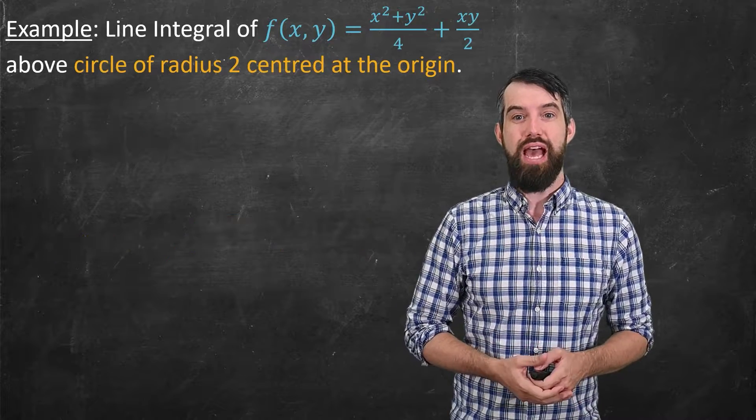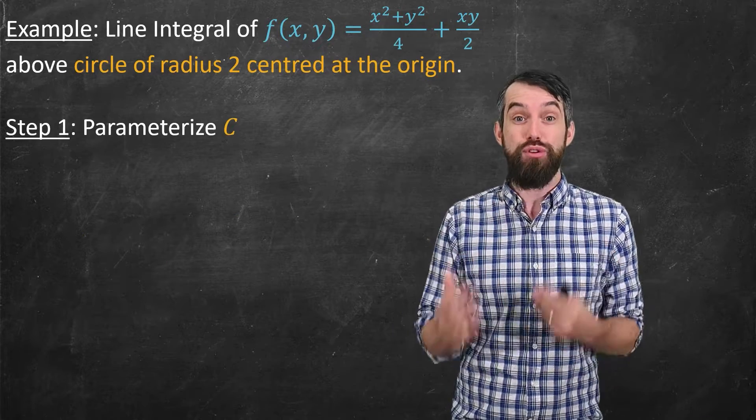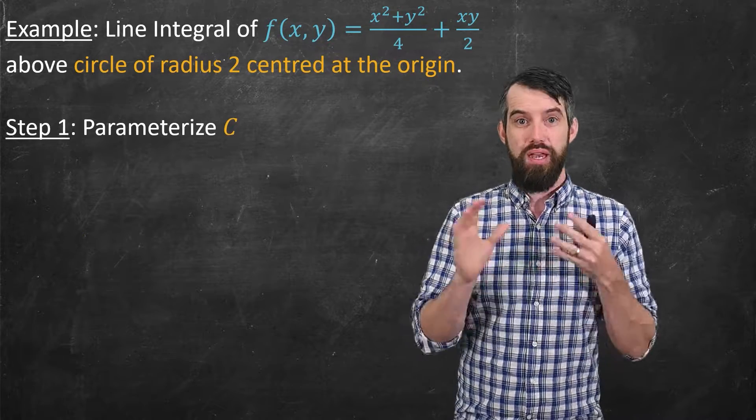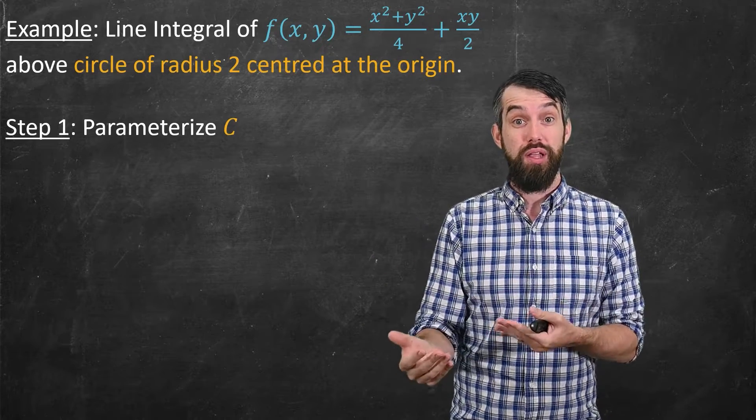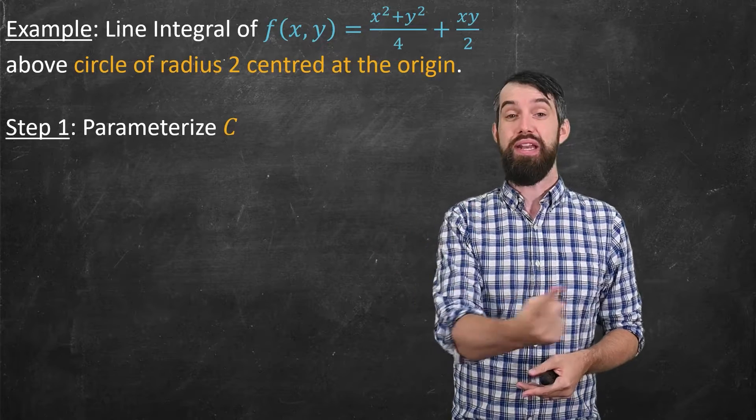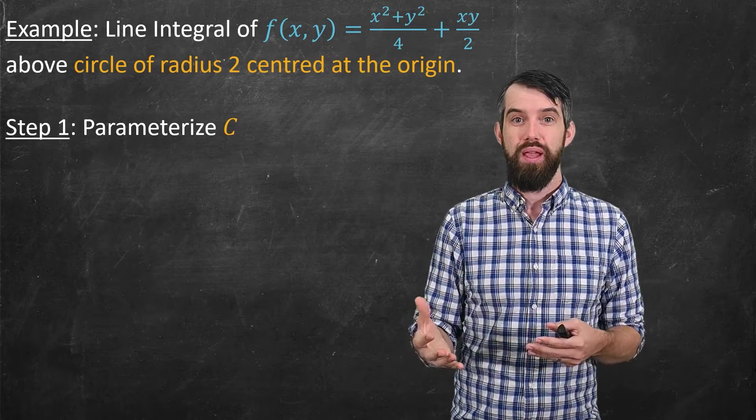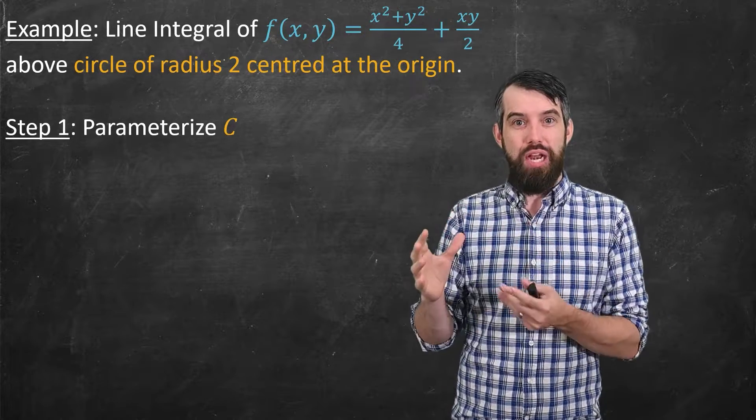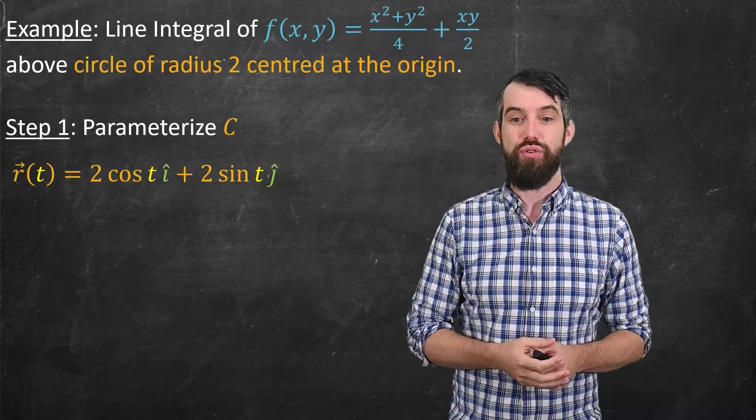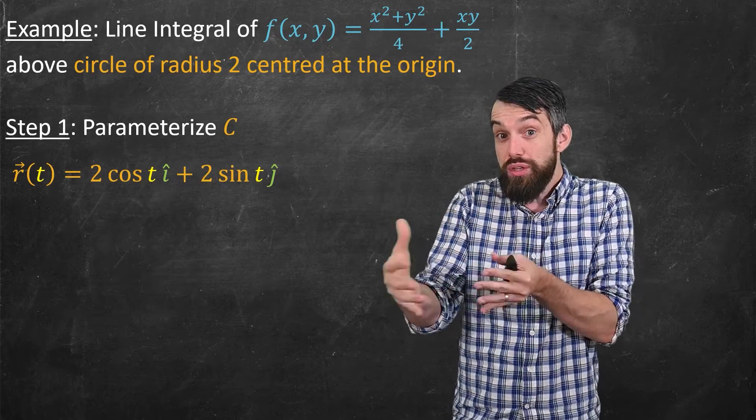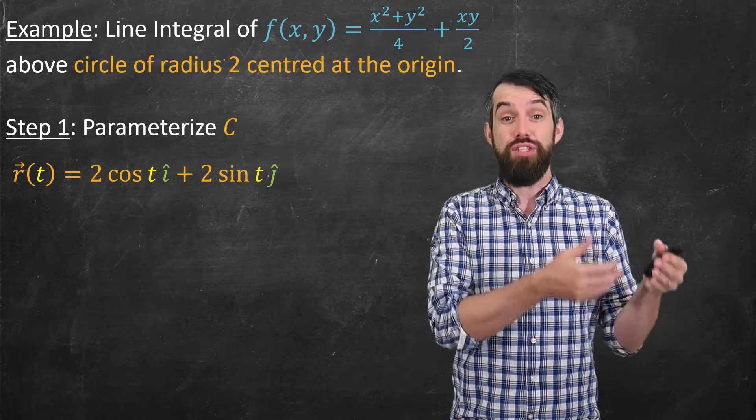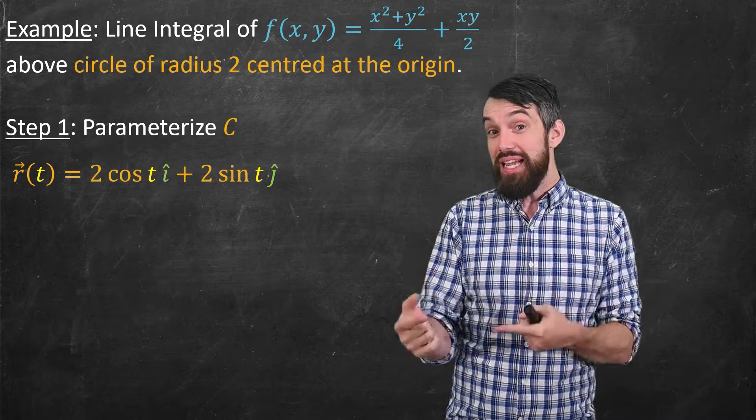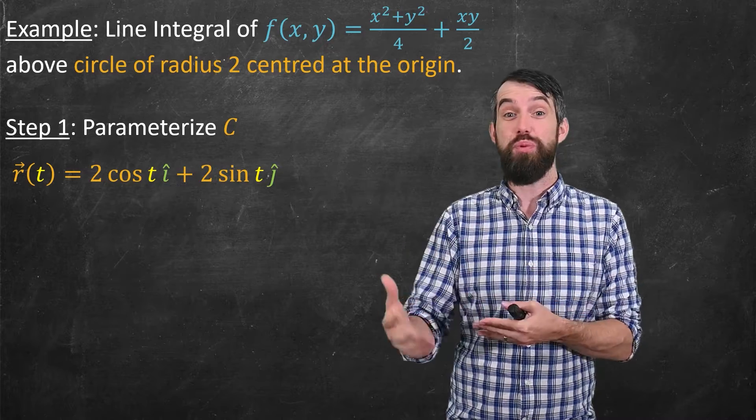The first step we're going to have is to find a parameterization for the curve C. Now, so far in the problem, all I've been given is a geometric description. The curve C is a circle of radius 2 centered at the origin. But this is a relatively standard curve, and it has the following parameterization, namely 2cos t in the i-hat direction, and 2sin t in the j-hat direction. This makes sense that it's a circle because the defining property of a circle is that the radius squared is x squared plus y squared.